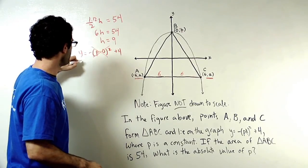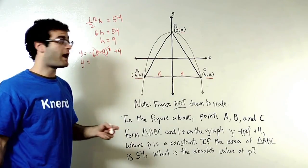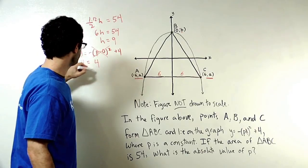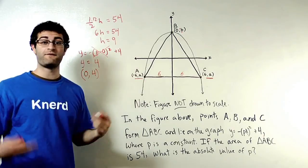And since it's P times zero, zero times anything is going to be zero. This whole term cancels out, and I know that when X is equal to zero, Y is going to be equal to 4. So now I know I have the point, instead of zero comma B, I can call it zero comma 4.